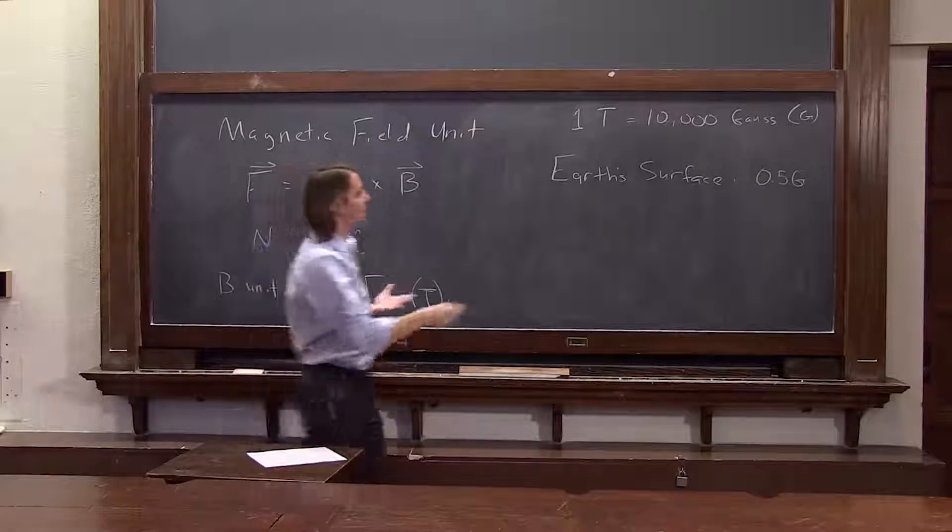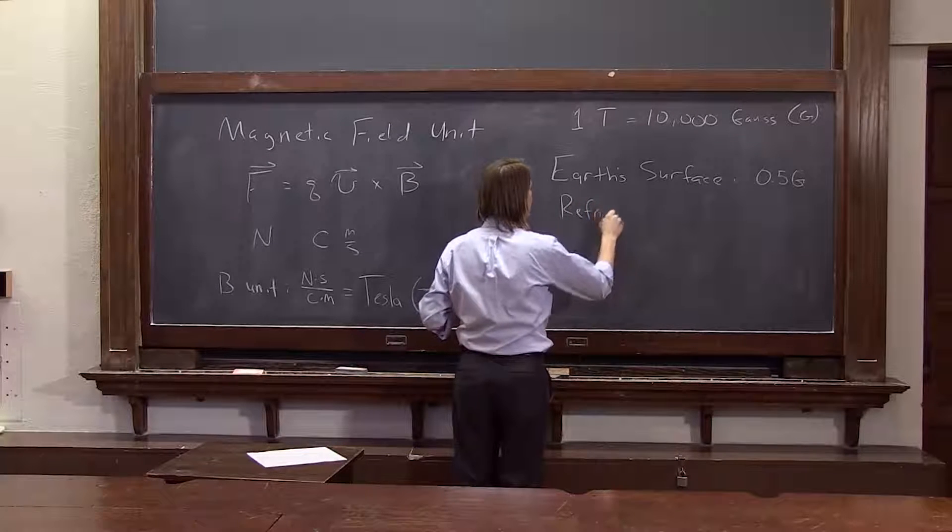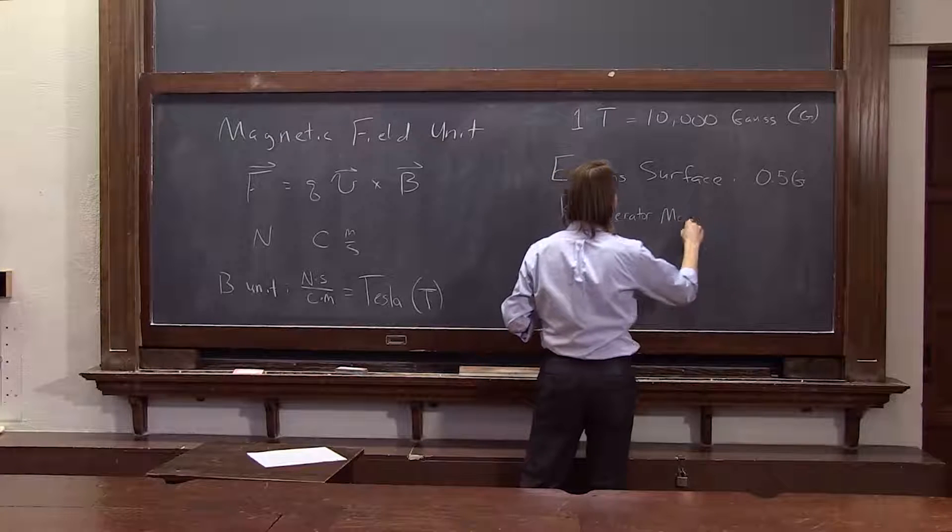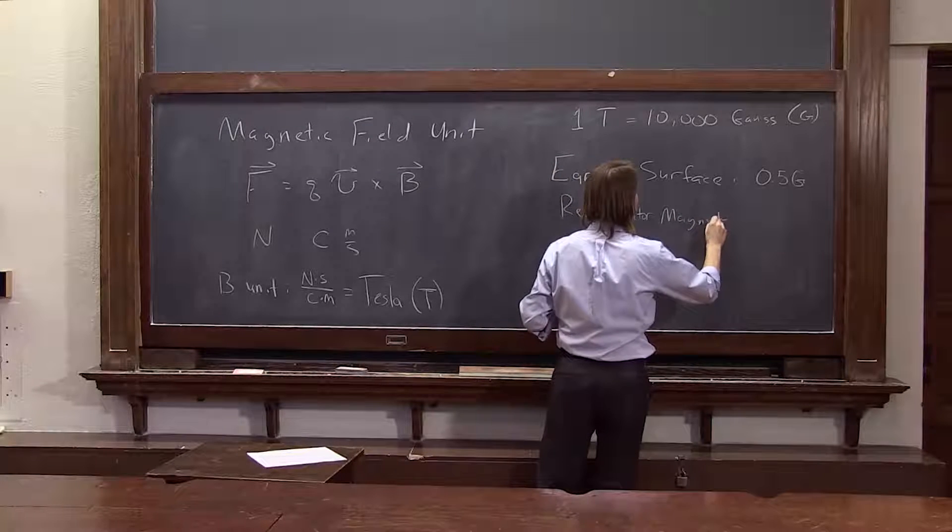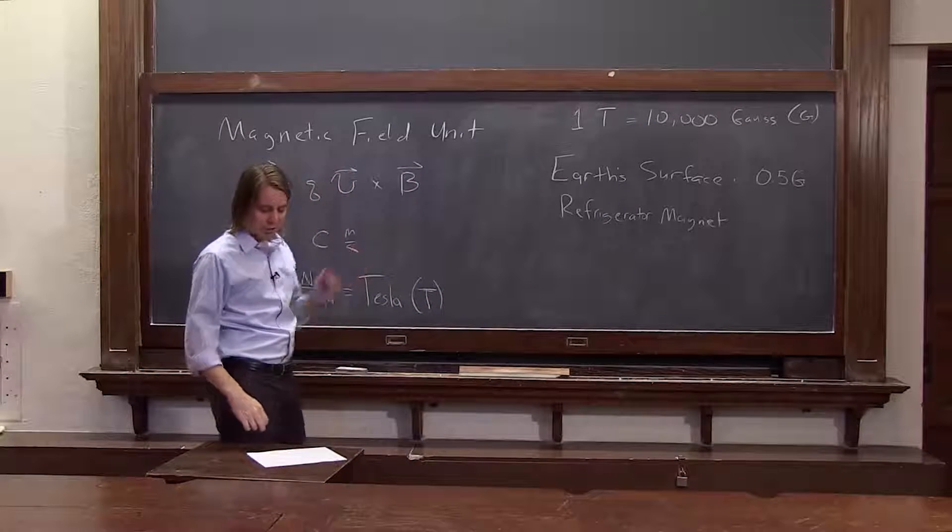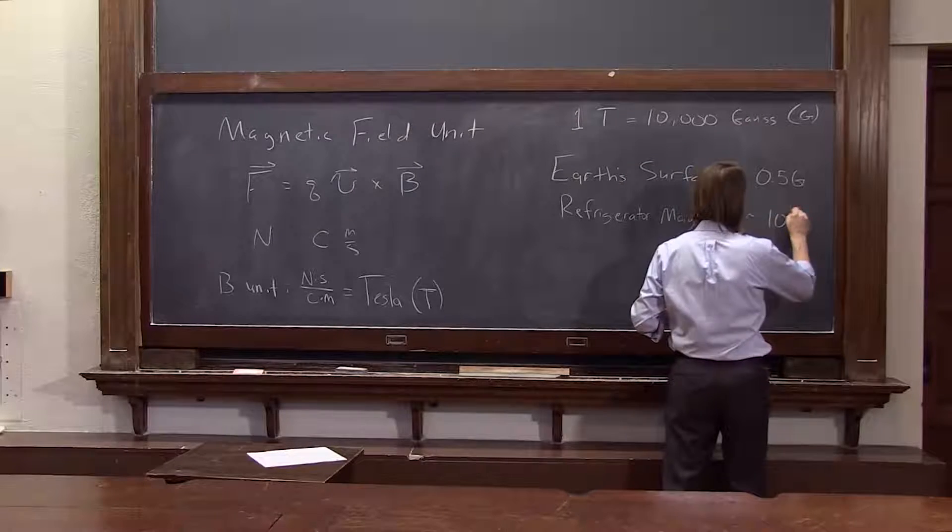Another thing would be a refrigerator magnet. Those little black magnets that are common are stronger than the Earth's magnetic field. They can hold something up. They don't just barely turn a needle. And they're, it depends, roughly 100 Gauss.